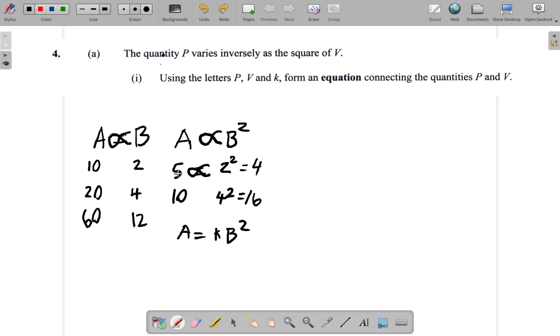Now, if A was 5 when B was 2, and A is 10 and B is 4, you could use any one of these and find K. For example, you could say 5 is equal to K multiplied by 2 squared. So 5 is equal to K multiplied by 4. So K would be 5 divided by 4.